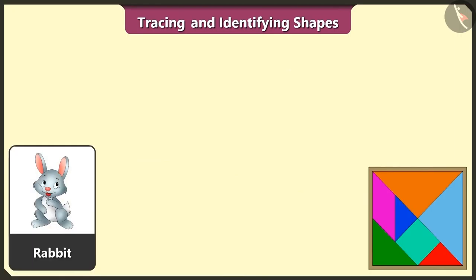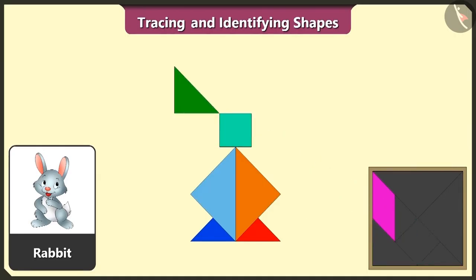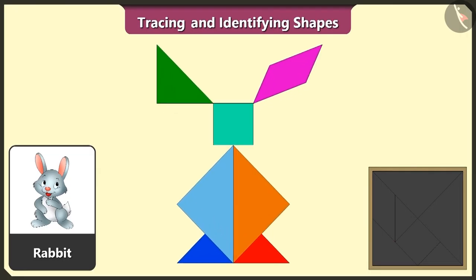This is a rabbit. Now we will try to create a rabbit using four triangles, one square, one more triangle, and one quadrilateral. See, the rabbit is ready!